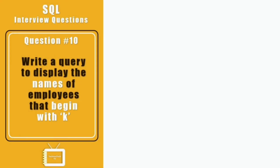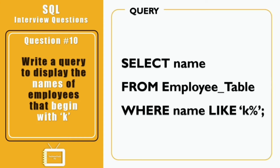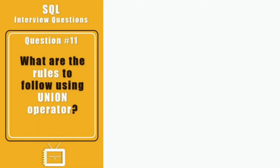Question ten: write a query to display the names of employees that begin with 'K'. The LIKE command is used in a WHERE clause to search for a specified pattern in a column. Depending on the query, we can use two wildcards with the LIKE operator — the percent sign (%) and the underscore (_).